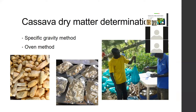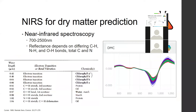There is a third way that people have started using, and this is NIRS, or near-infrared spectroscopy. This is being used with a benchtop spectrometer at CIAT, and other organizations have also jumped on board. It's been proven highly accurate and fast.